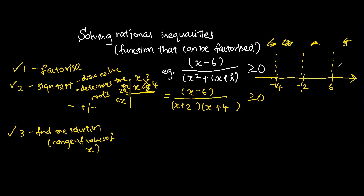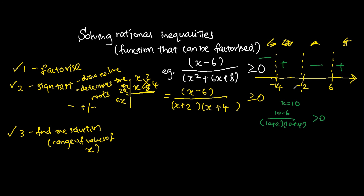Let's focus on the portion greater than 6. We pick a random number greater than 6 — for example, x equals 10. Then we have 10 minus 6 over (10 plus 2)(10 plus 4), which gives 4 over positive values — this is positive, greater than 0. Using the alternating sign pattern, the portions from right to left are: positive, negative, positive, negative. So you do not need to recalculate each section.